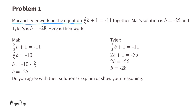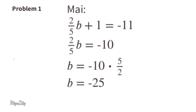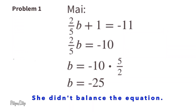Problem number 1. Mai and Tyler work on the equation 2/5 B plus 1 equals negative 11 together. Mai's solution is B equals negative 25 and Tyler's is B equals negative 28. Do you agree with their solutions? Let's start with Mai. It looks like Mai subtracted 1 from the left side, turning 2/5 B plus 1 to just 2/5 B, and on the right side added 1, changing negative 11 to negative 10. I don't agree with Mai because she didn't balance the equation — she subtracted 1 on the left and added 1 on the right, making the equation out of balance.